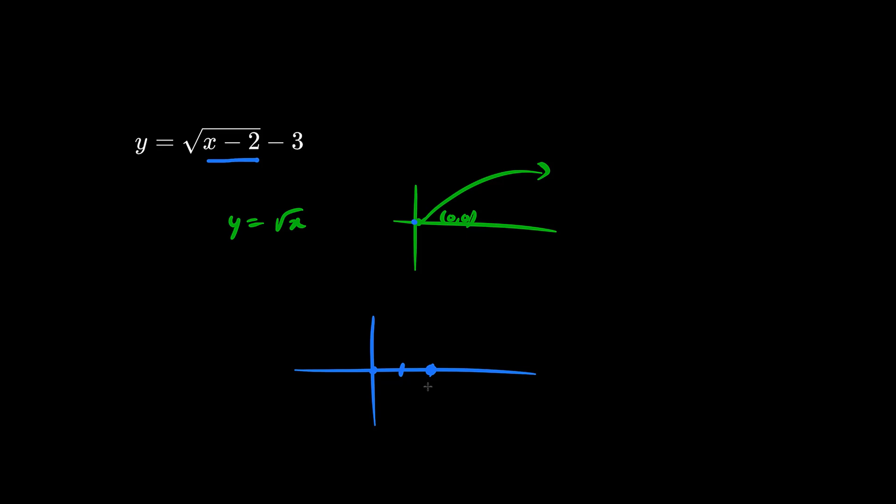And when you say minus 3, we go three units down. So the origin is now here and the graph opens up towards the right this way. So this is the sketch.